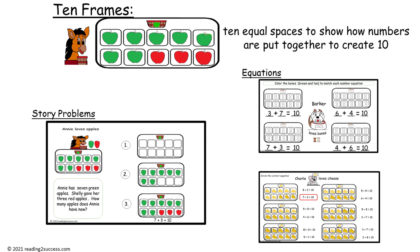Then we move over to equations. There are different types. In our first example, we want kids to color the bones brown and tan to match each number equation. So in that first example, kids would color three bones brown and seven bones tan.